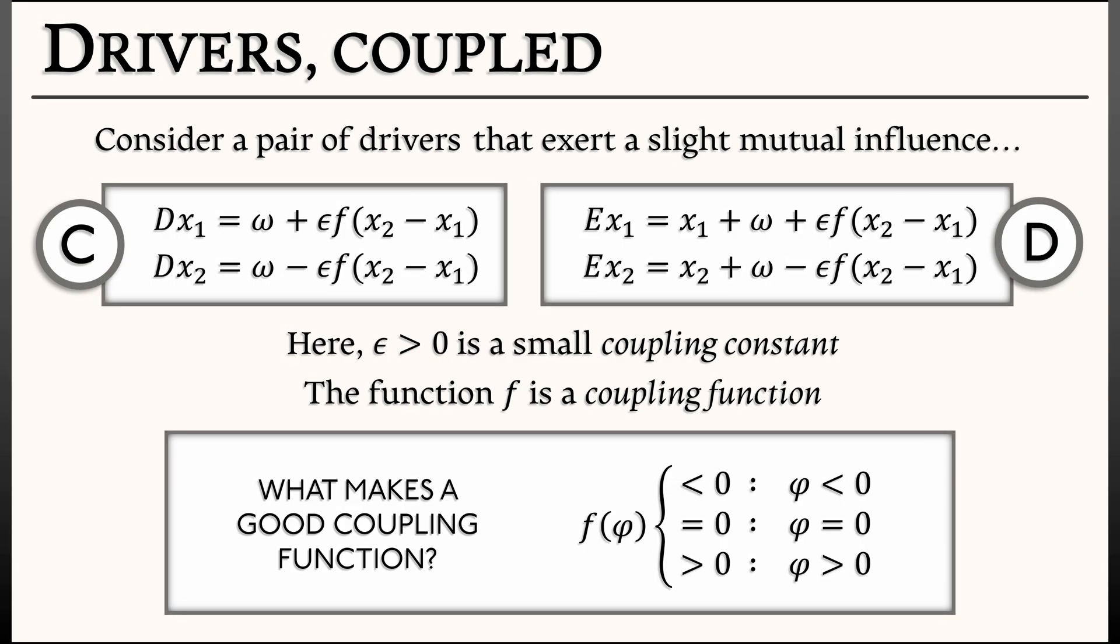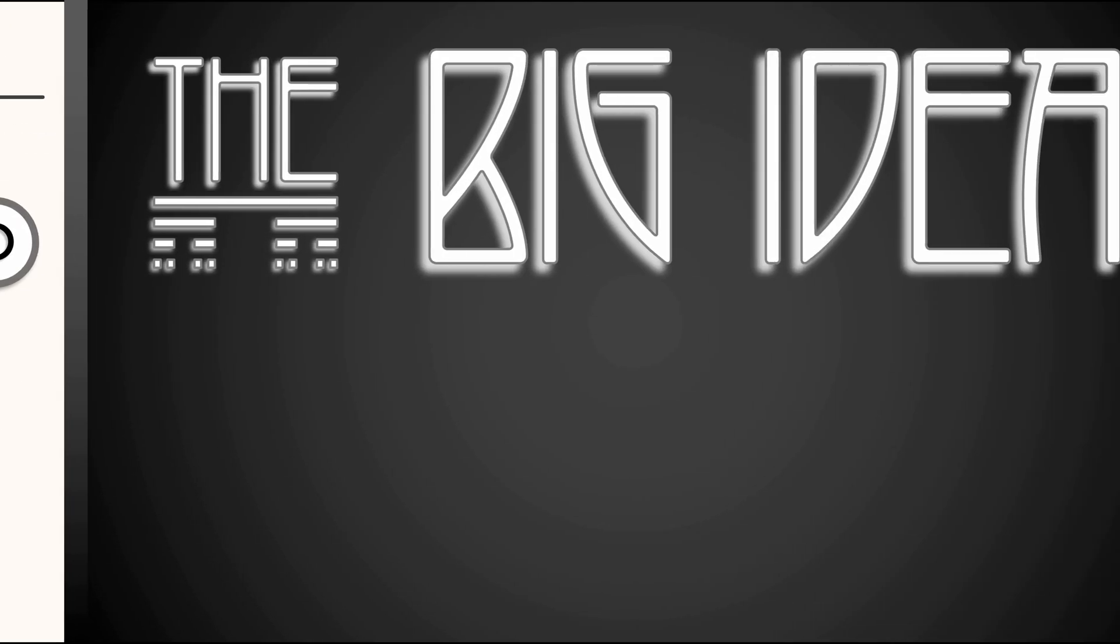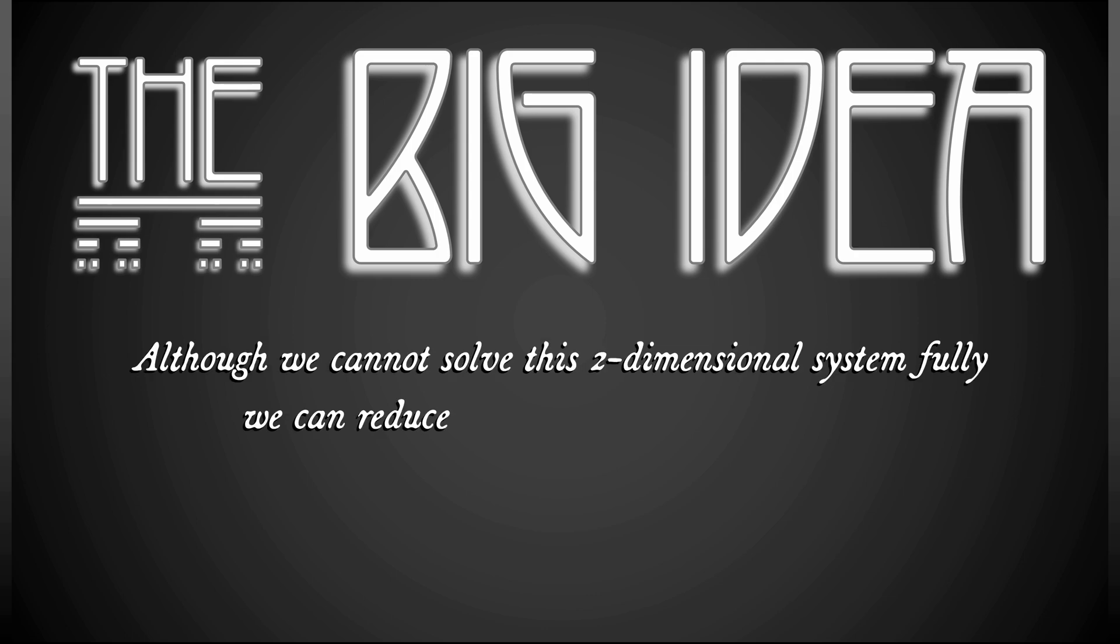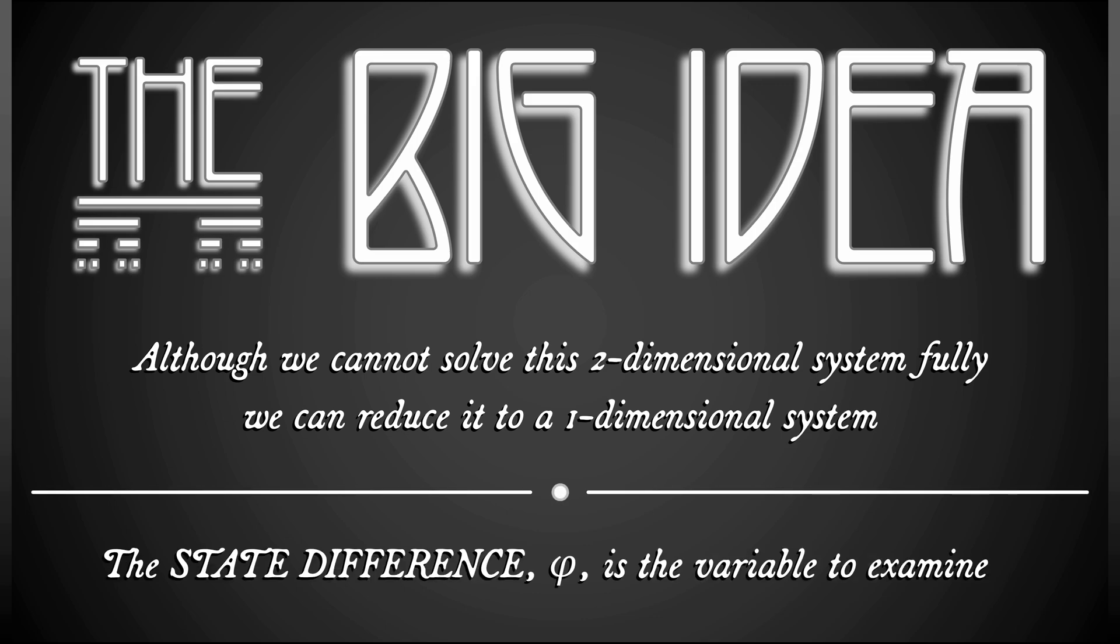Now, if you look at these systems in continuous time, in discrete time, we can't solve them. They are fully two-dimensional coupled systems. But the big idea is that even though we can't solve these two-dimensional systems, we can, through clever manipulation, reduce it down to a one-dimensional system that we can solve. And that state difference, phi, is going to be exactly the variable that we want to pay attention to.